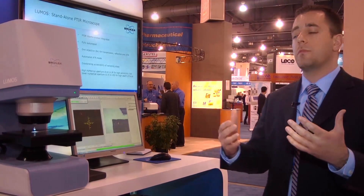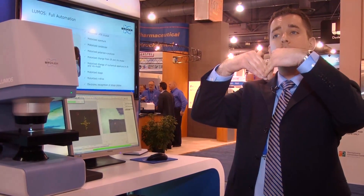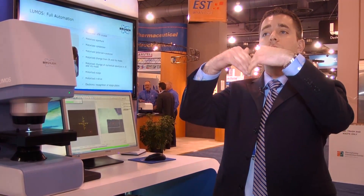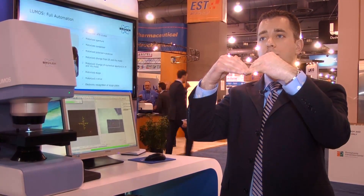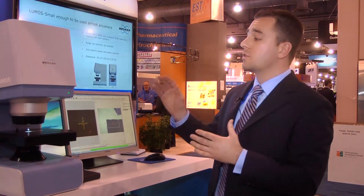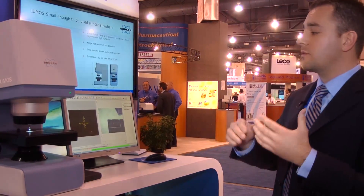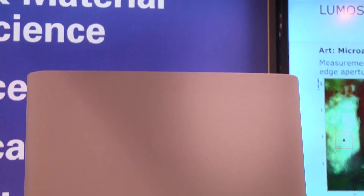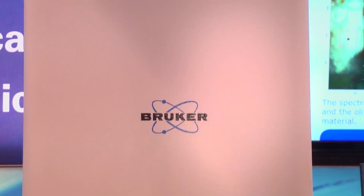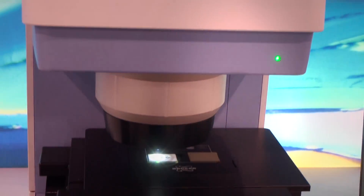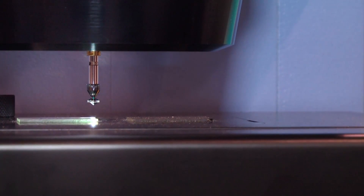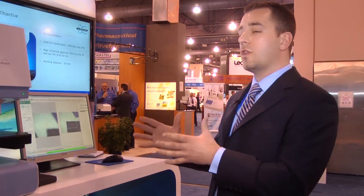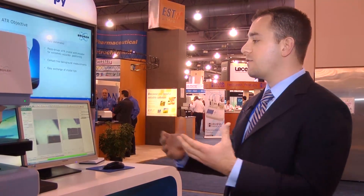In a standard visible microscope, you want a low numerical aperture to get the best visible focus on your sample. But when you take an infrared spectrum, you actually want a higher numerical aperture to collect all of the scatter coming off your sample. In the Lumos, this happens automatically: we collect the visible image under a 0.4 numerical aperture, and when you switch to infrared, it automatically switches to a 0.6 numerical aperture, giving you the best visible clarity and the best infrared data.